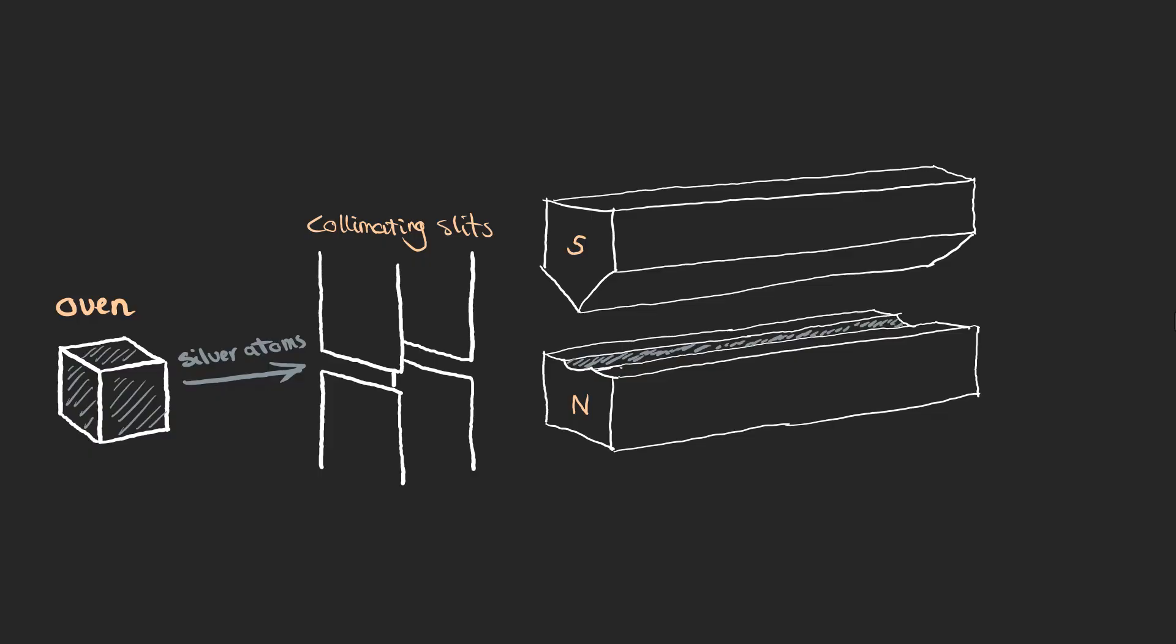This is the shape of the magnet they used in their experiment. The magnet consisted of two pole pieces, one with a sharp edge and the other with a flat or slightly concave surface. This asymmetric design created a strong gradient in the magnetic field along one axis that we typically call the z-axis.